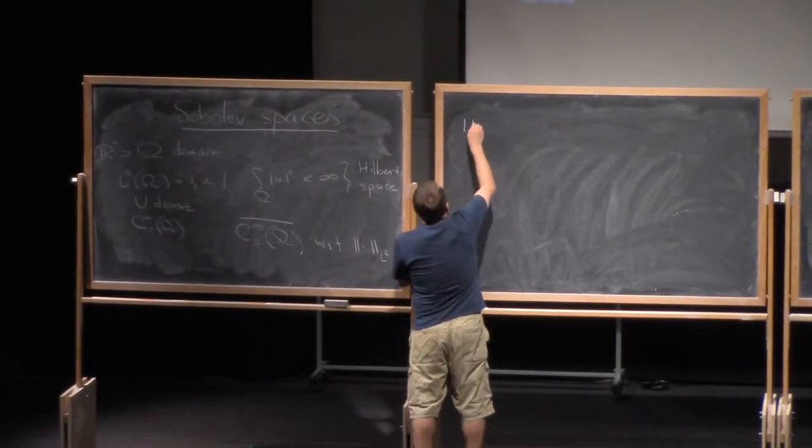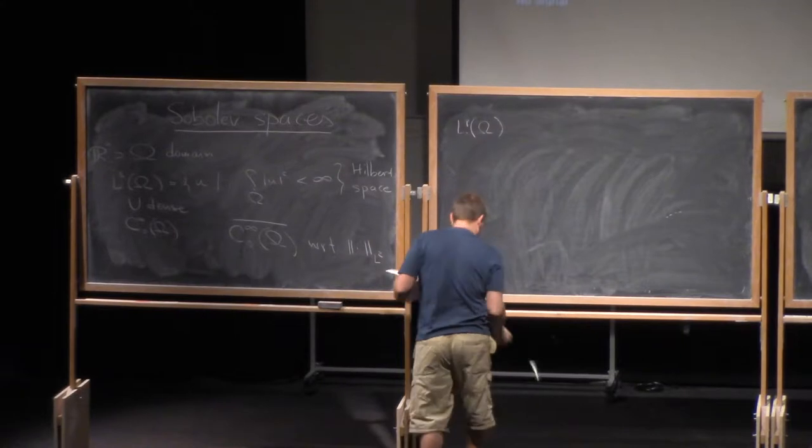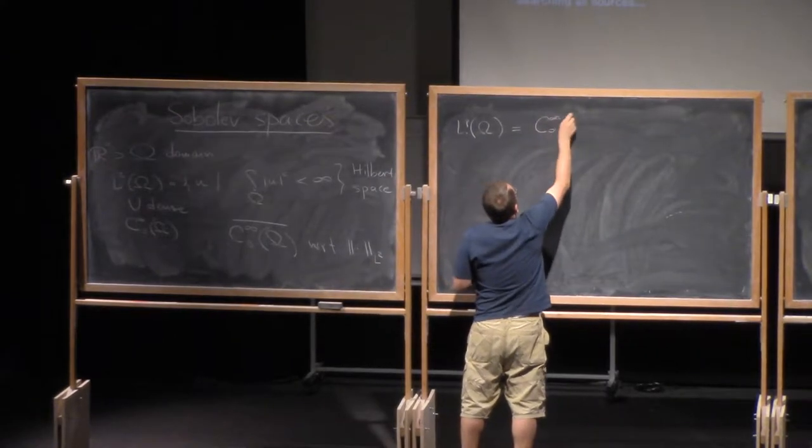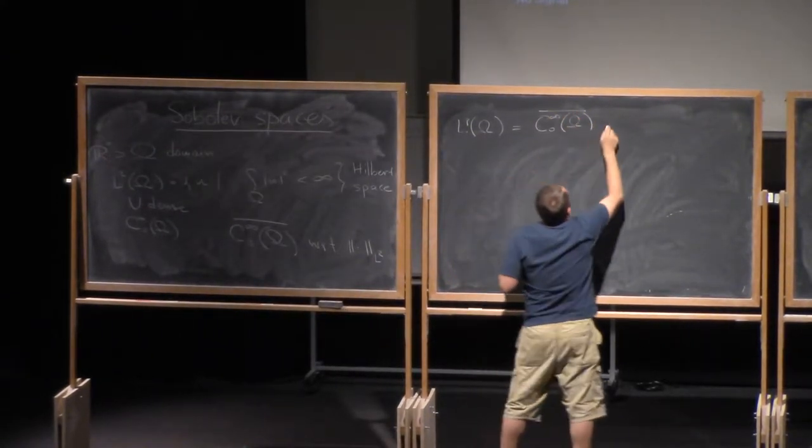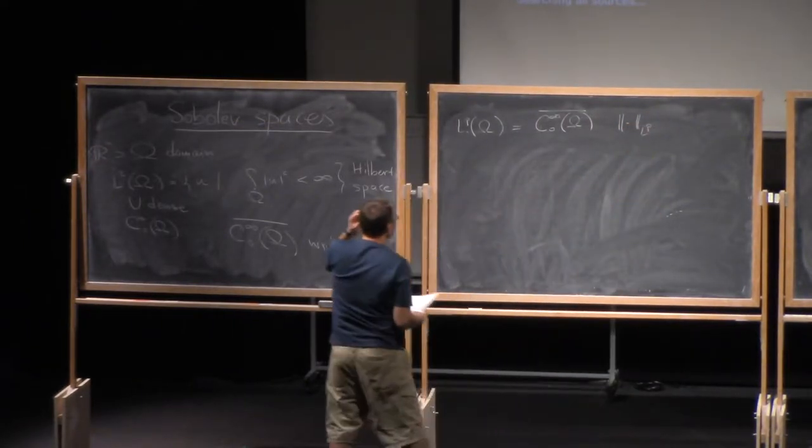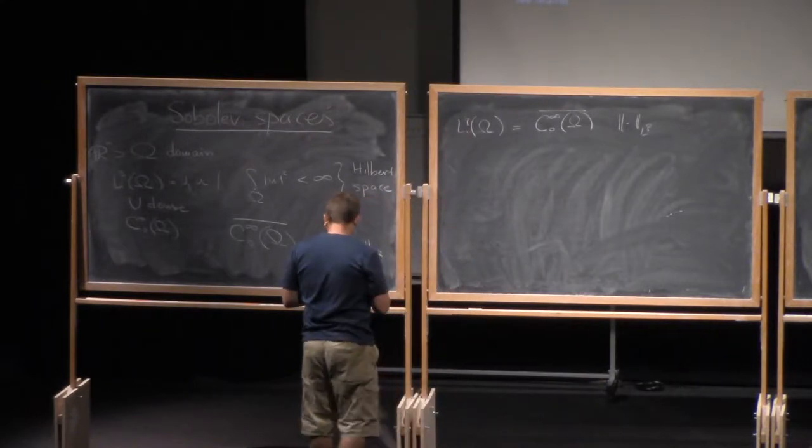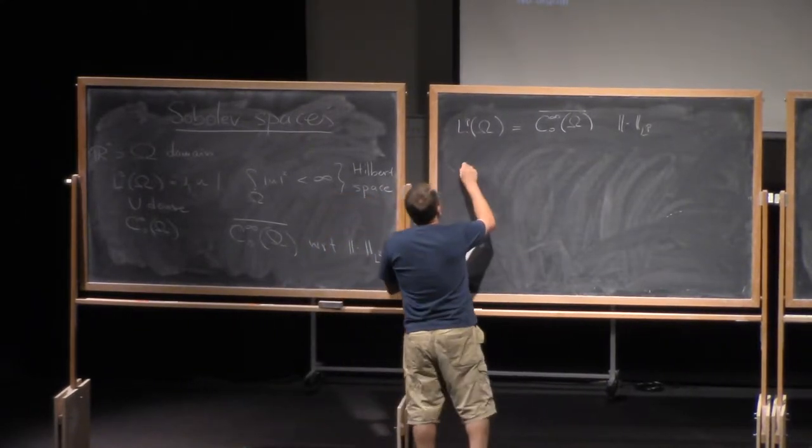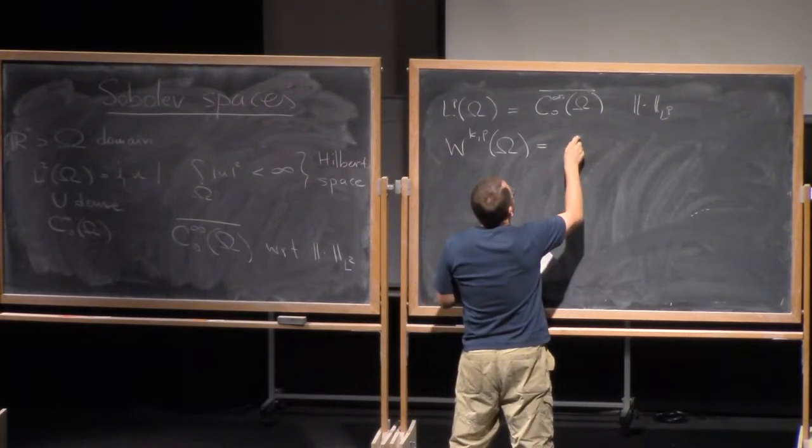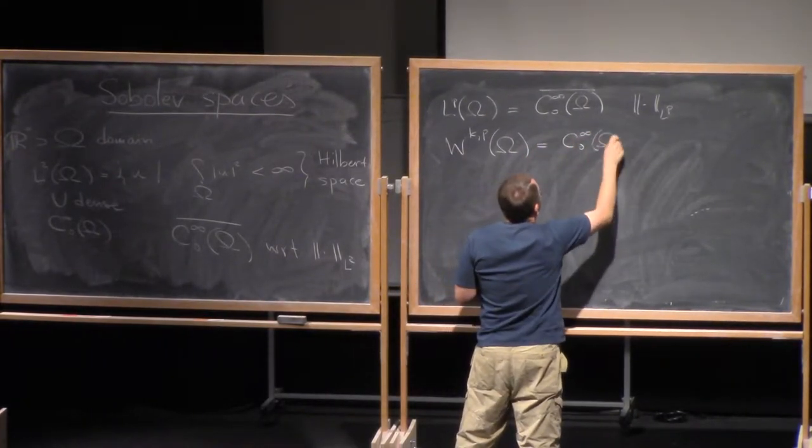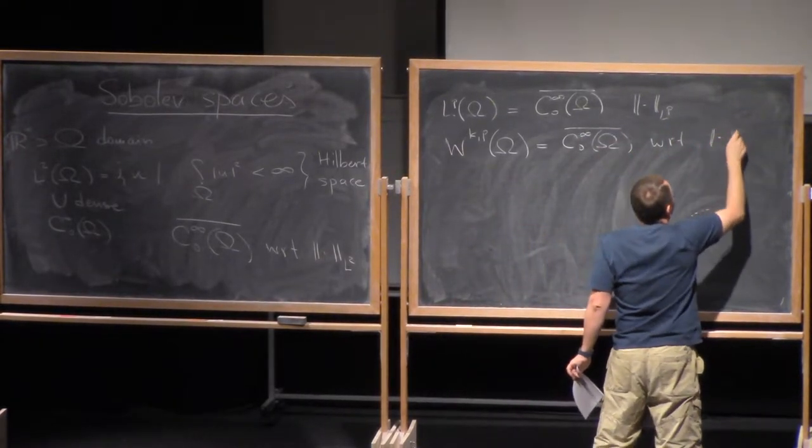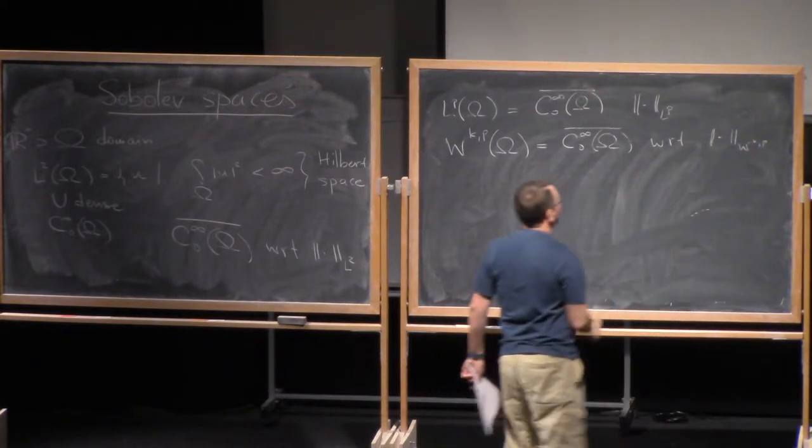So what we could do, we could define L^p omega, right? So this is just the closure of C^∞ omega, but now I take the L^p norm. And what we also could do, we could construct spaces W^{k,p} omega. So this is the closure of smooth functions, but now with respect to the norm W^{k,p}. So let me define what it is.